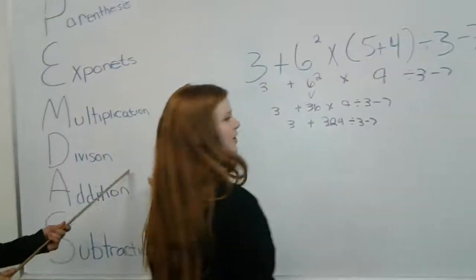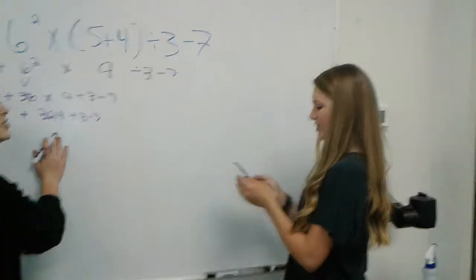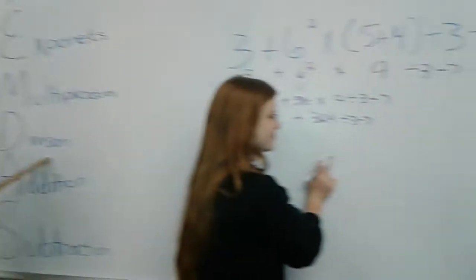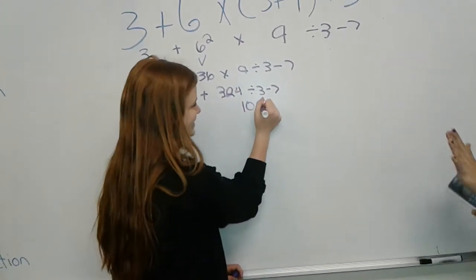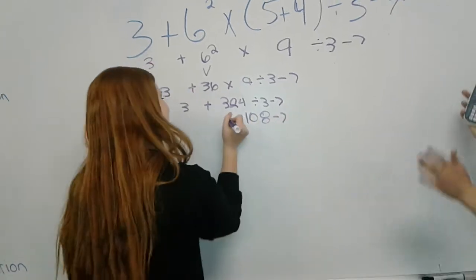Next, division. What is 324 divided by 3? 324 by 3 equals 108. 108 minus 7 plus 3.